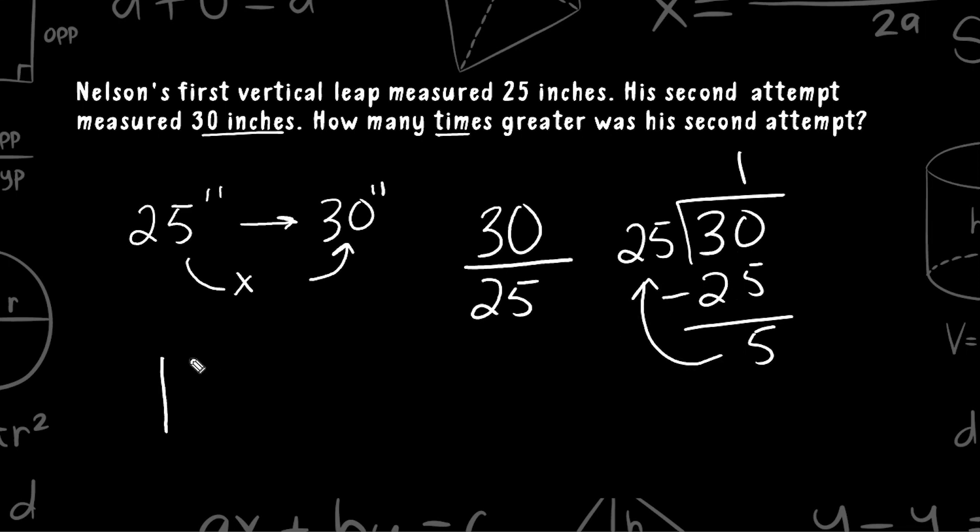Let's express that as a mixed number. And then what we have to do is take the fractional portion of our mixed number and simplify. So 5 and 25 have a greatest common factor of 5. So what we're going to do is divide the top and the bottom by a factor of 5. So that would give us 1 whole and 1 fifth. So we would say that Nelson's second attempt was 1 and 1 fifth times greater than his first attempt.